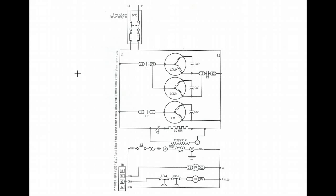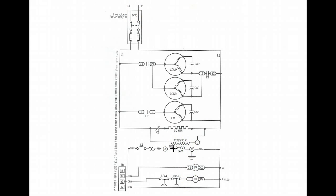When you're looking at a schematic circuit such as this — and this happens to be a straight cool air conditioning system — the circuit has power applied. There's 208/230 volts coming in, 24 volts at the transformer, and the system is at rest. There is no call for cooling. There is 24 volts on the R terminal going out to the thermostat, but the thermostat is not calling for anything at this time.